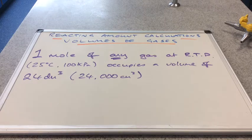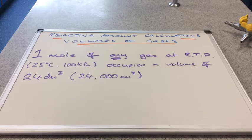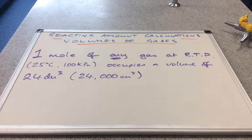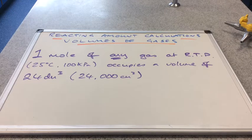One mole of any gas at RTP, that's room temperature and pressure, which is 25 degrees C and 100 kilopascals, occupies a volume of 24 decimeters cubed, and that's the same as 24,000 centimeters cubed.